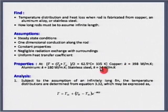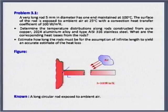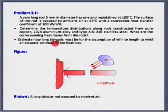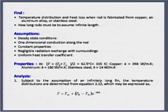We assume an infinitely long fin because the problem does not give us a length — only the diameter. The problem also asks us to estimate how long the rod must be for the infinite length assumption to be accurate, which tells us we can start with that assumption. Using the infinite fin temperature distribution: θ/θ_b = (T − T∞)/(T_b − T∞) = e^(−mx).